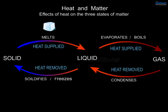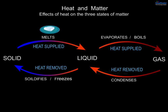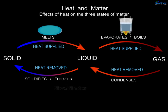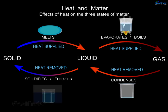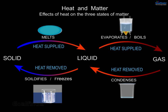Let us summarize the effects of heat on the three states of matter. When heat is supplied to a solid, it melts and turns into liquid. When further heat is supplied to a liquid, it evaporates or boils and turns into gas. When heat is removed from the gas state, it condenses into liquid. When further heat is removed from the liquid, it solidifies or freezes into the solid state.